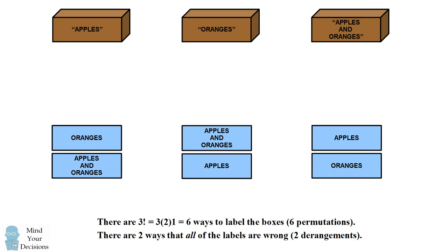A permutation in which all of the elements are in the wrong spot is known as a derangement. There are two possible derangements. Now how do we identify which of the two cases we're in?